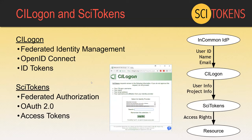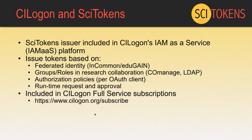We can connect SciTokens with federated authentication such as CI Logon, so that when the user authenticates with an InCommon identity provider, information about the user and their project memberships can be used for token issuance. This combines OpenID Connect for authentication and OAuth 2 for authorization. We've now added support for SciTokens issuance in the CI Logon Identity-as-a-Service platform, where we can issue tokens based on federated identity, groups and roles in COmanage and LDAP, per-client authorization policies, and runtime request and approval.